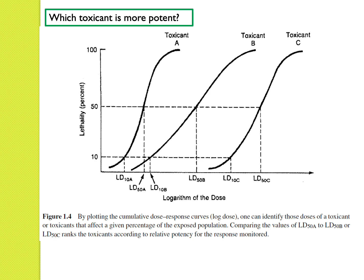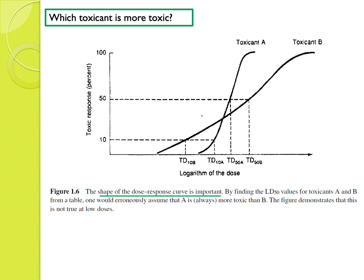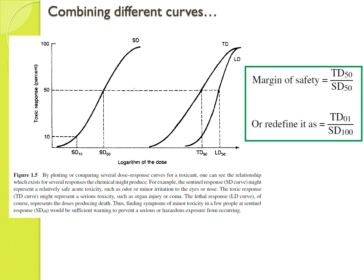The smaller the LD value, the more potent the toxicant. Comparing curves, it depends on which dose range you're looking at — at smaller doses one toxicant may be more toxic, but at TD50, Toxicant A may be more toxic. Combining different curves, you can derive a therapeutic-index-like concept: you look at the sentinel dose response and the lethal dose response, and get a margin of safety by dividing the values accordingly.